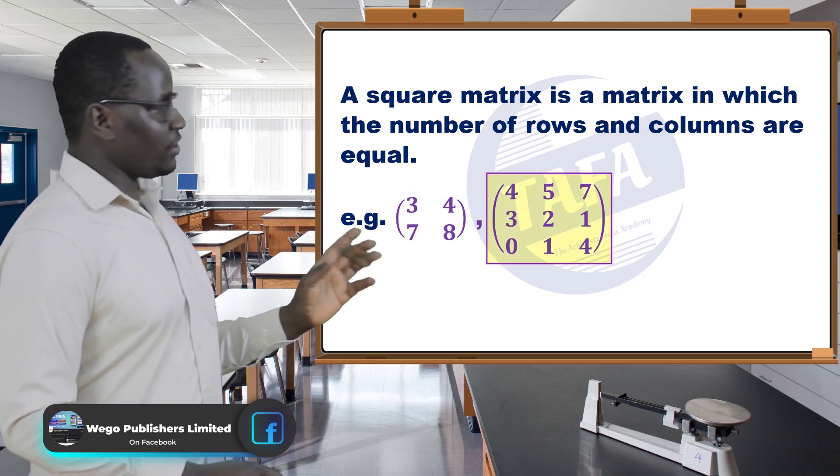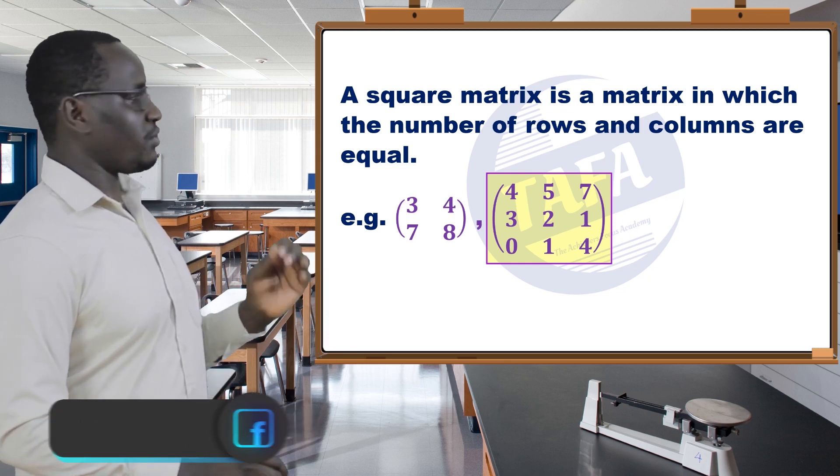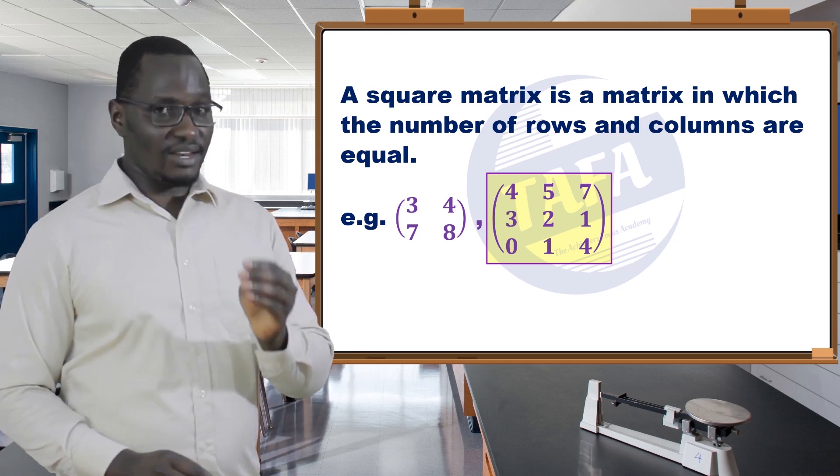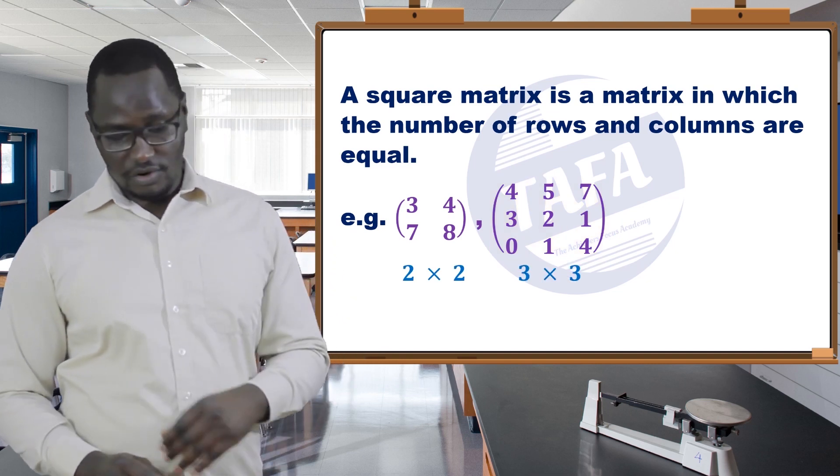Again, this is a square matrix, but it is a 3 by 3 matrix - that is, 3 rows and 3 columns.